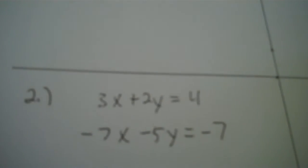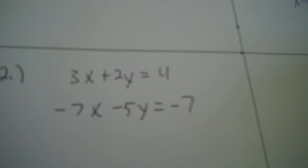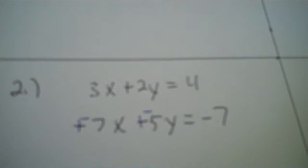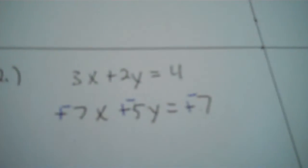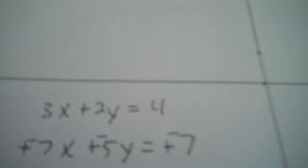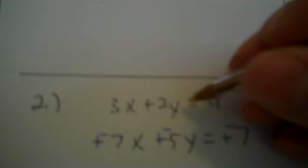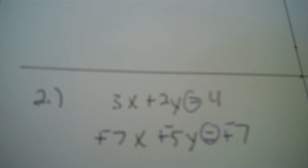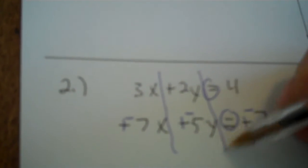Next problem. 3x plus 2y equals 4. Negative 7x plus negative 5y equals negative 7. I do not have either one of the variables by themselves. So we have no base. So we use the elimination method.